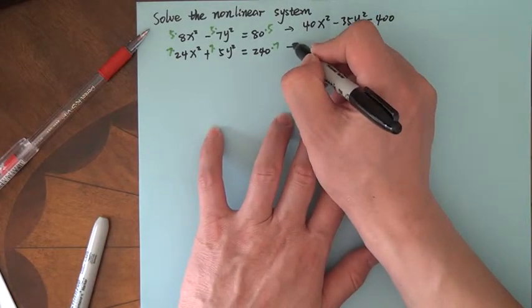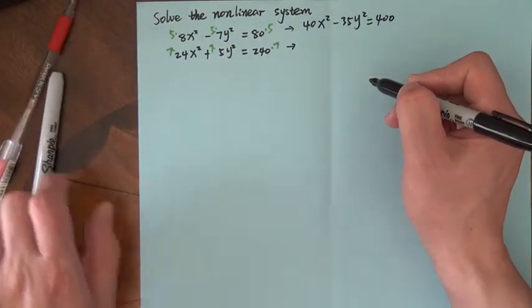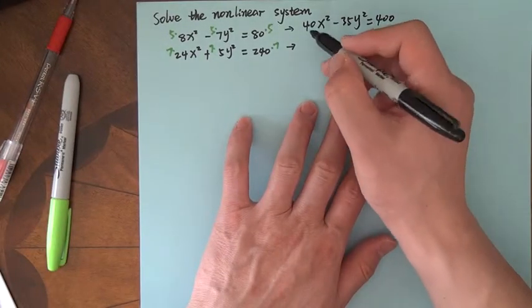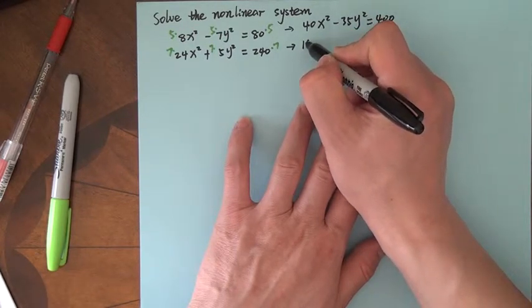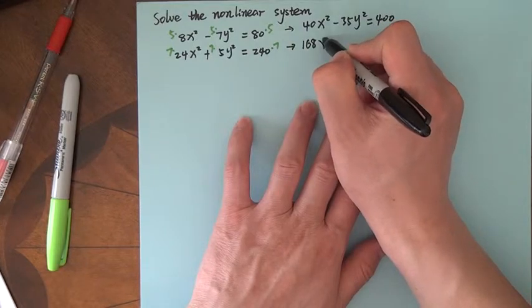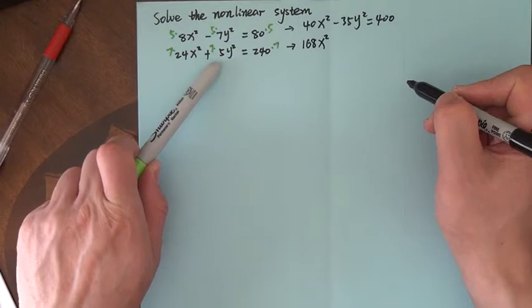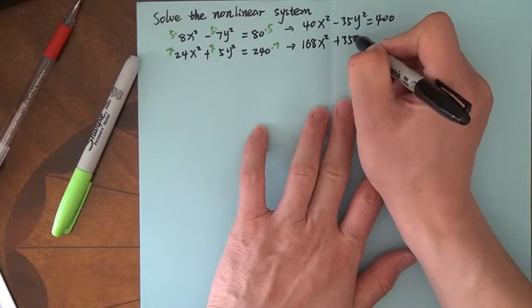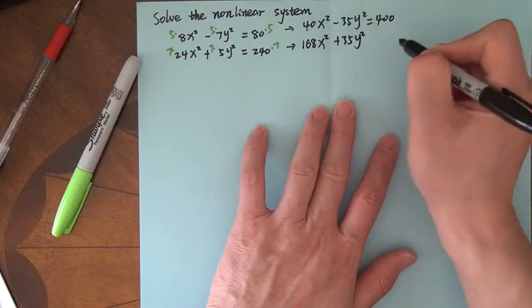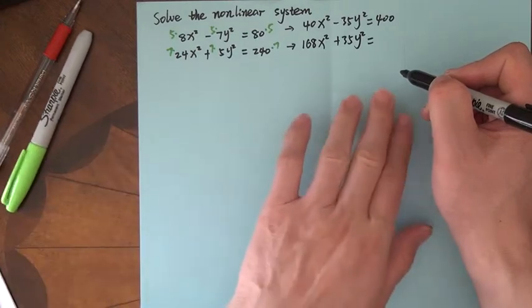Second equation: 7 times 24, that's 168x squared. And then 7 times 5, that's 35y squared.